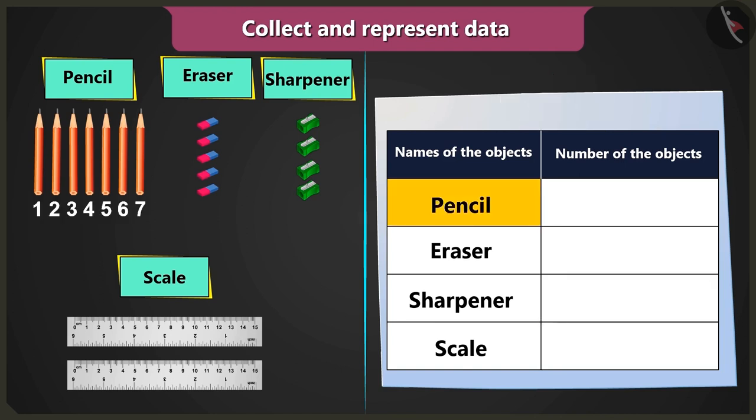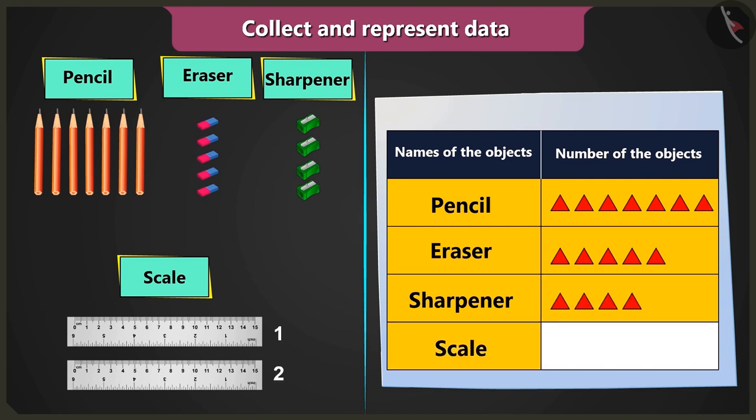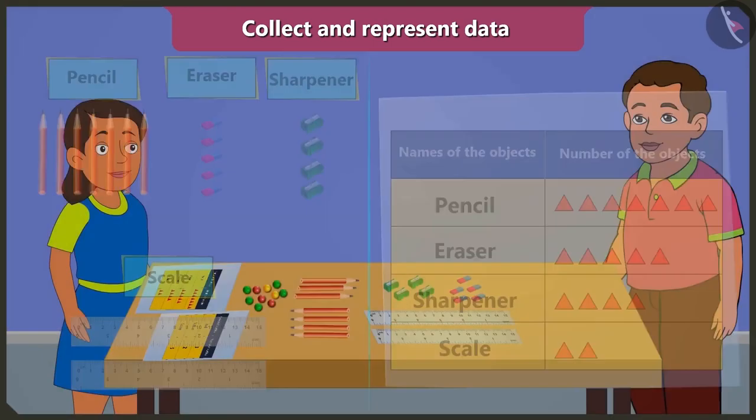You have seven pencils. So, you have to draw seven triangles in the column count of objects. I have five erasers. So, I have to draw five triangles. I have four sharpeners. So, I have to draw four triangles. And I have two scales. So, I have to draw two triangles.